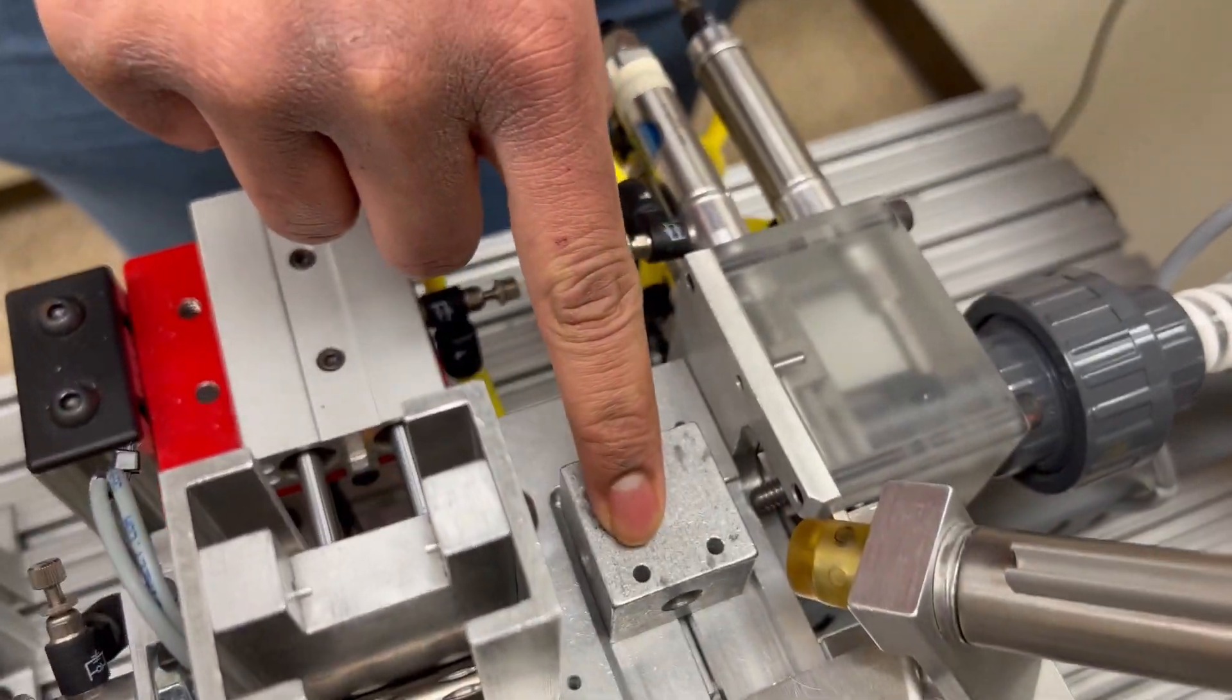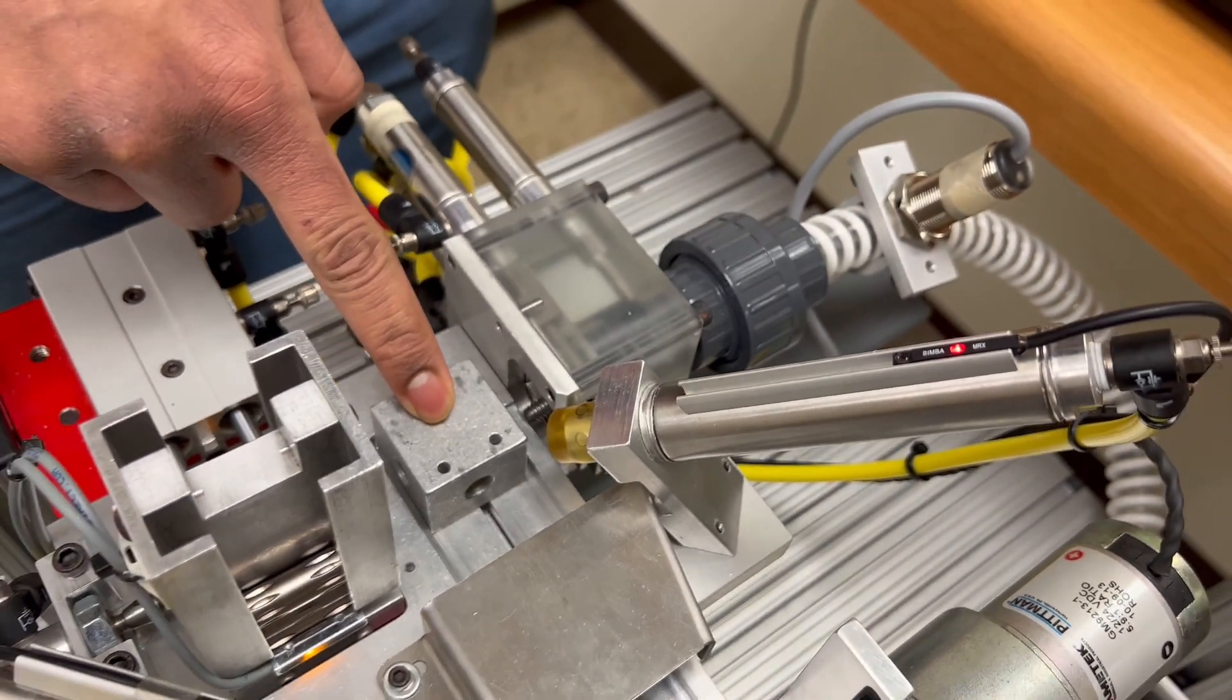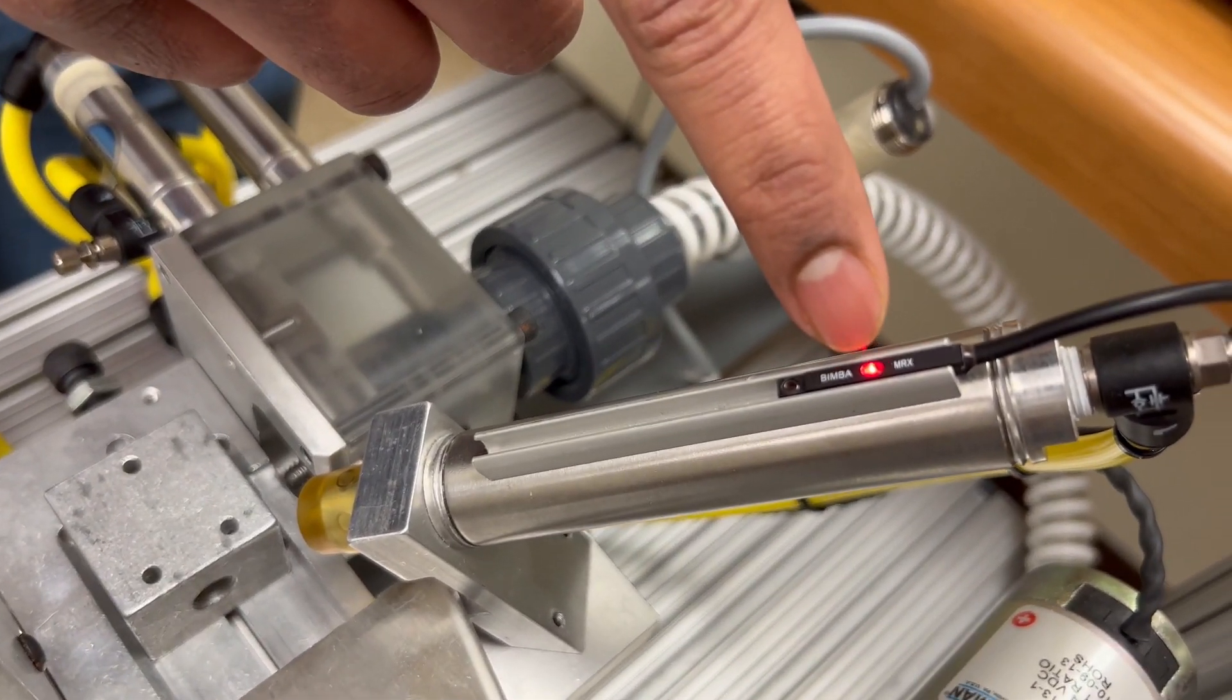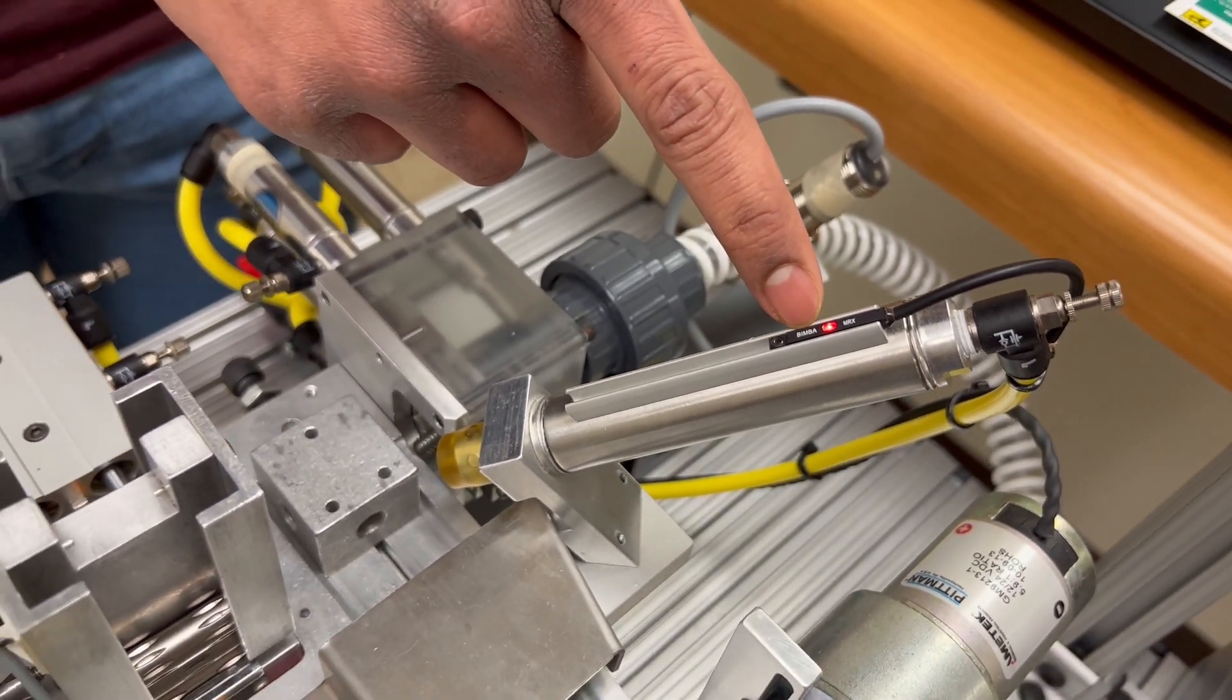And here we have the part that we are using for the assembly. And this cylinder is used to hold the part in place. And we also have magnetic reed sensors on the cylinder that is used to get the position of the cylinder if it is retracted or extended.